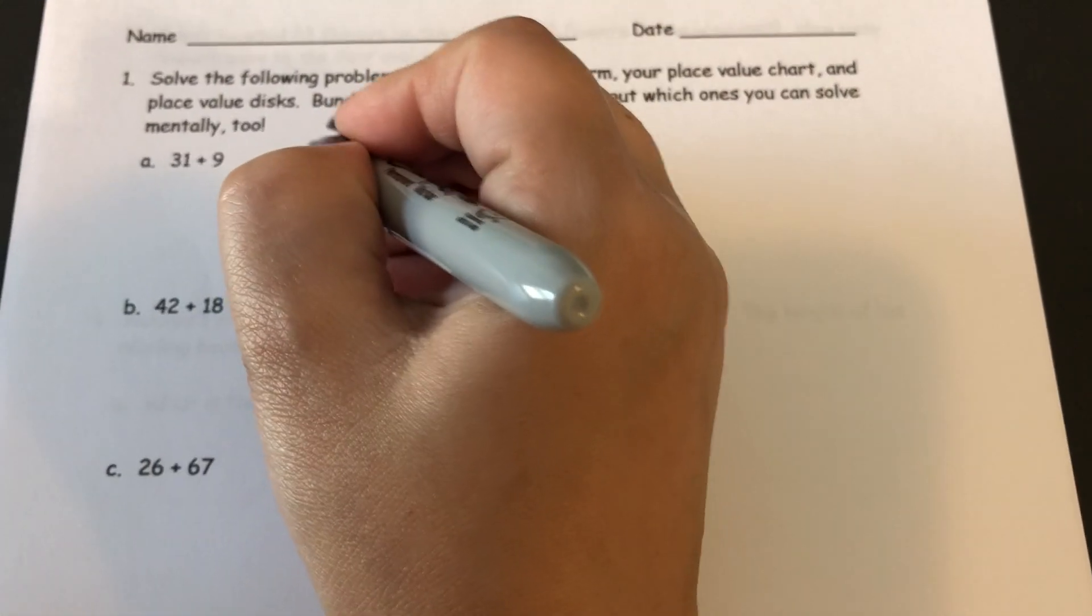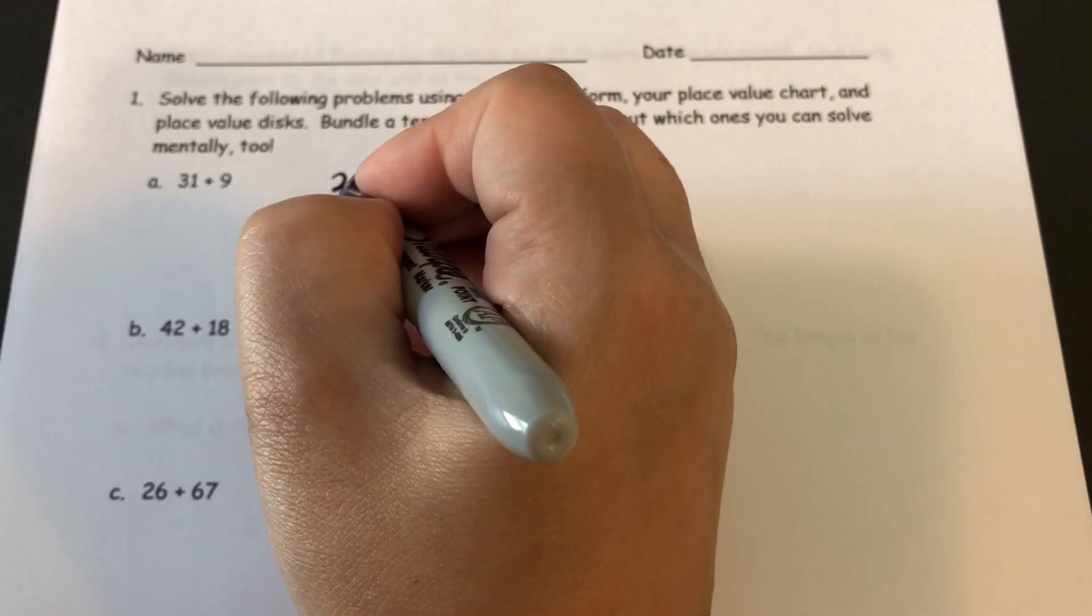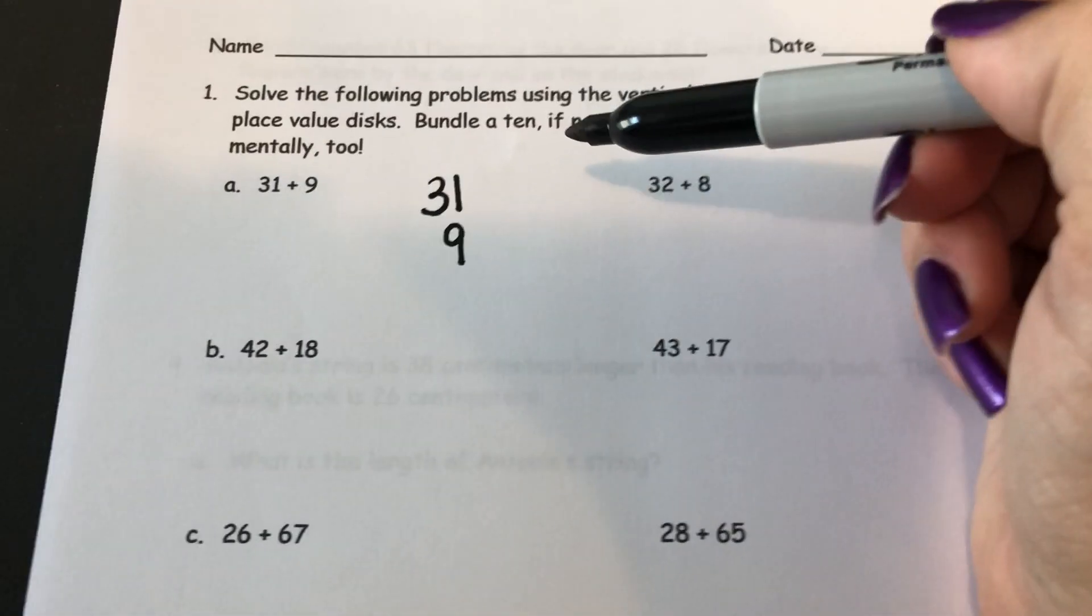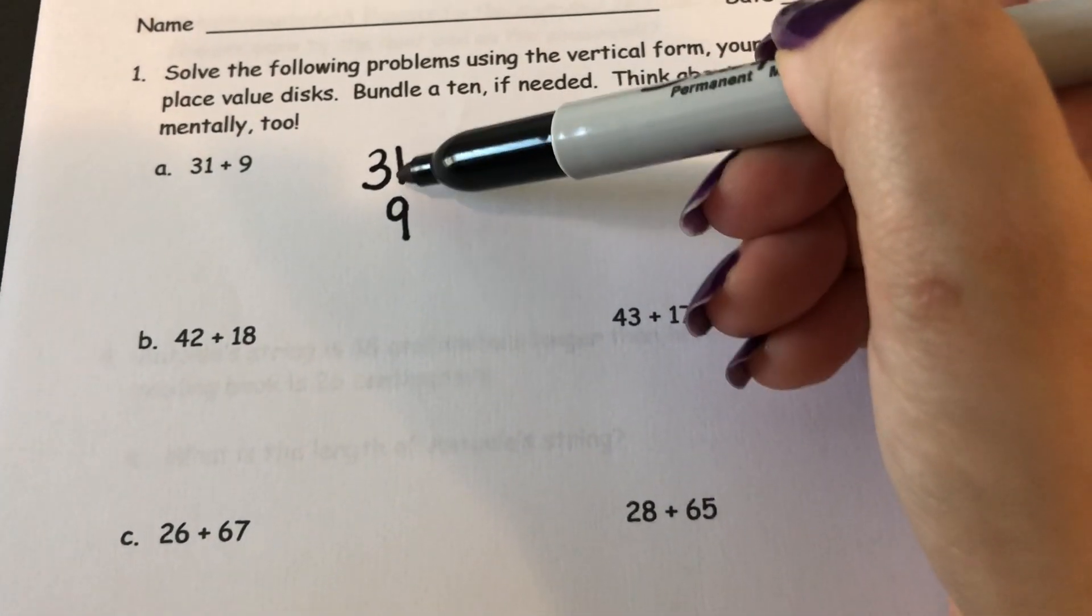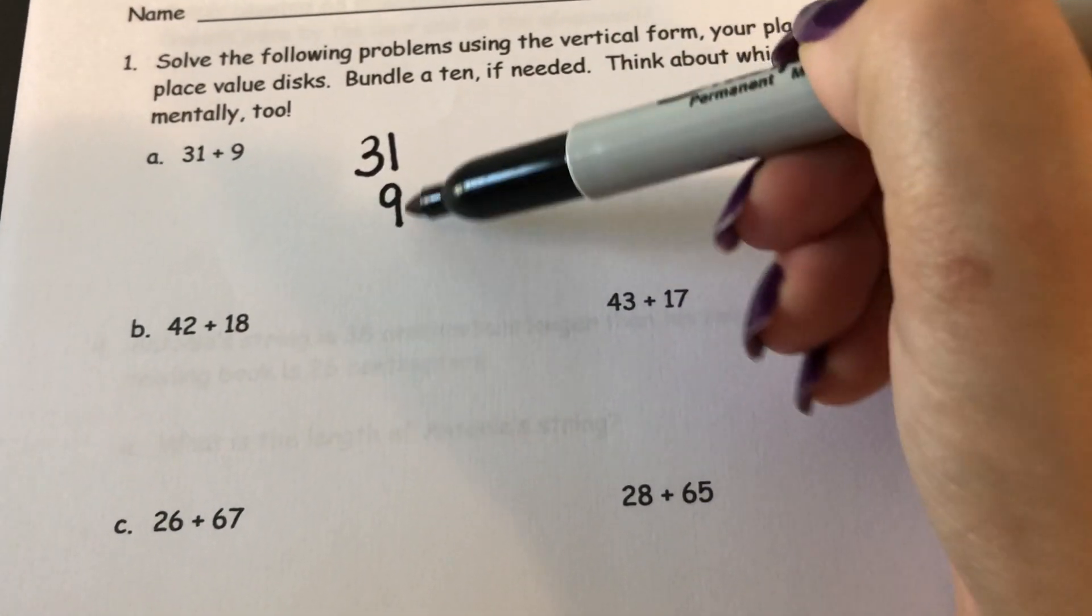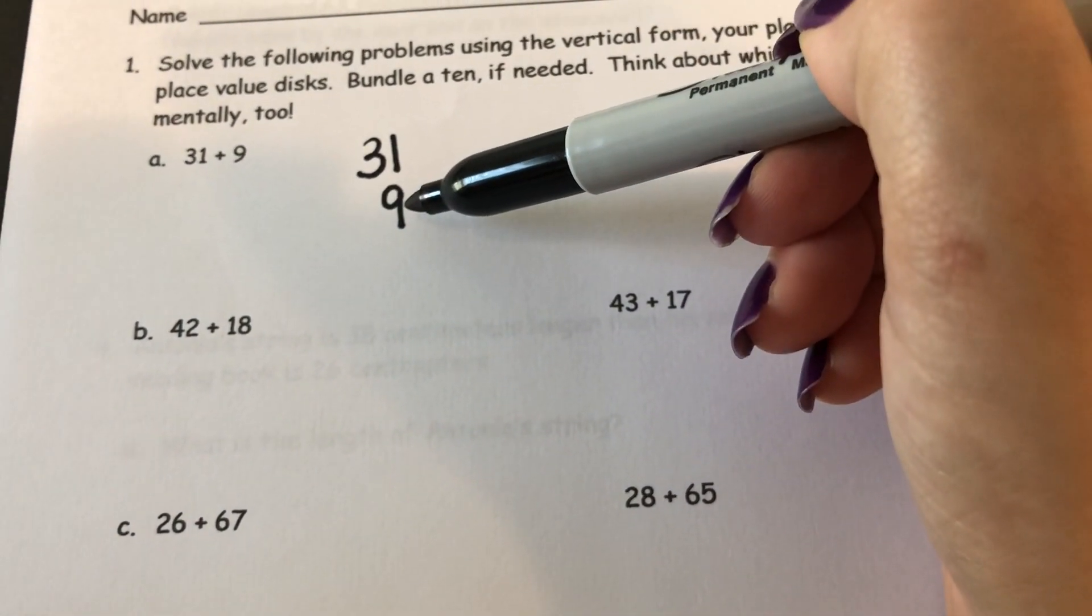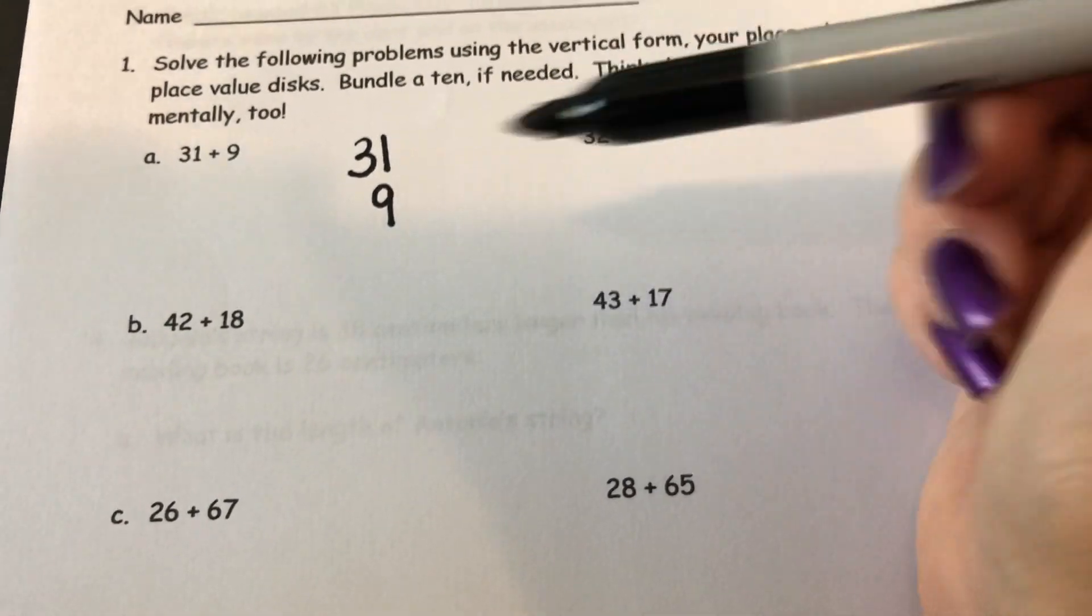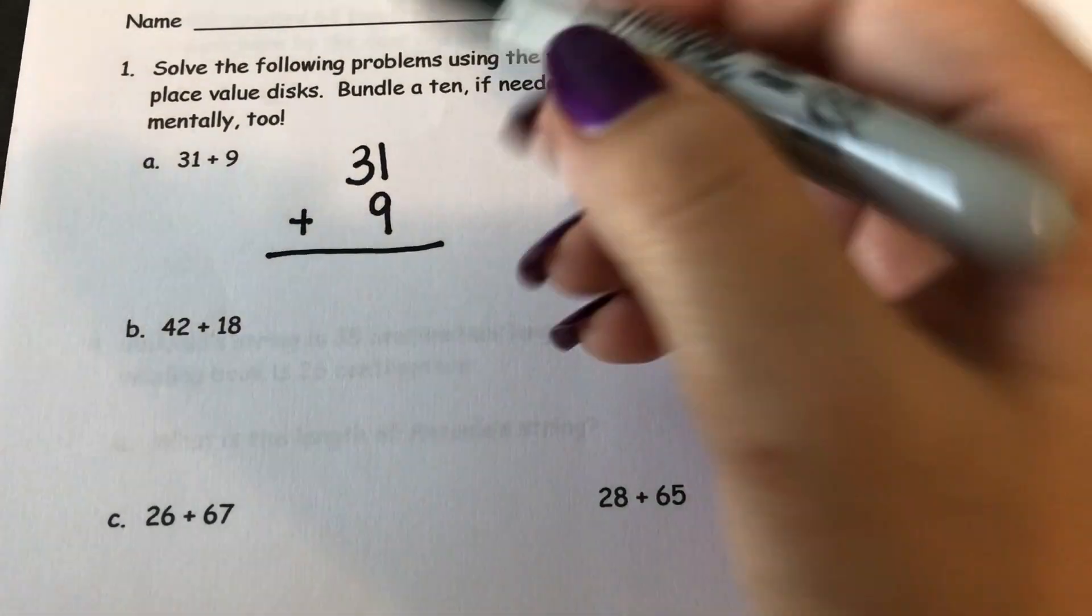For 31 plus 9, if I'm going to use the vertical form, I need to write my numbers vertically and line them up. Make sure if you're doing the vertical form, 9 ones has to be underneath the 1 ones. If you put the 9 ones in the tens section then you'd be saying that this 9 is a 90. Just be careful when you're lining your numbers up.